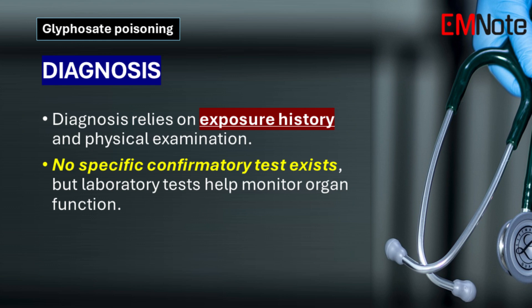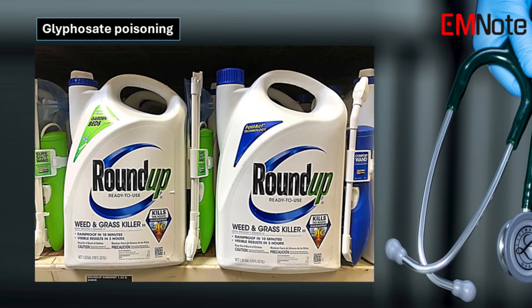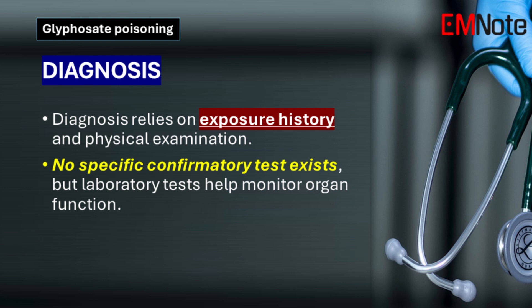A detailed history of exposure and a thorough physical examination are crucial in diagnosing glyphosate poisoning. While laboratory tests help assess the severity and monitor organ function, no specific test confirms glyphosate poisoning.